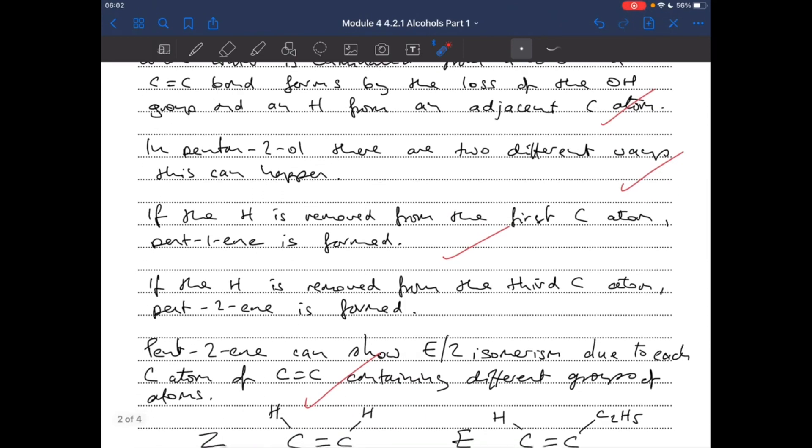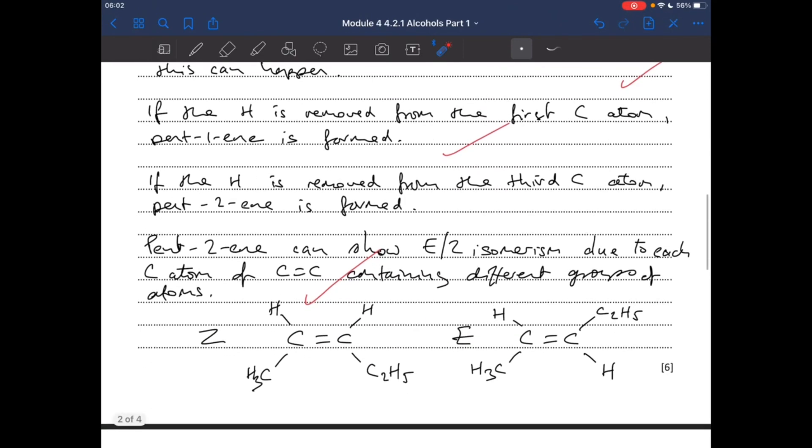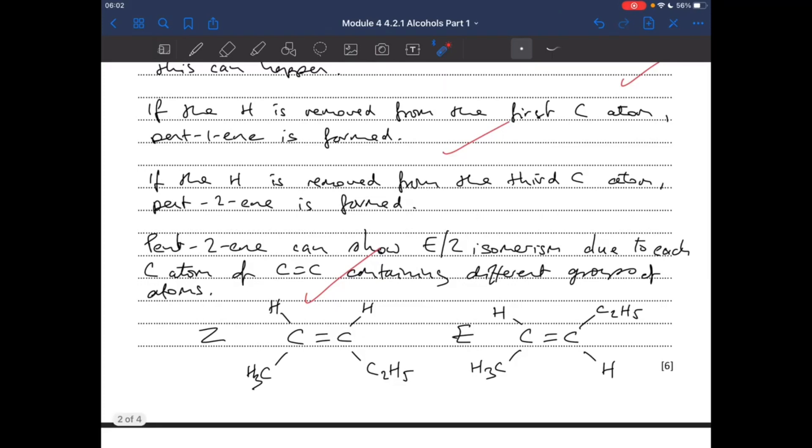And then here's my bit about EZ. Pent-2-ene can also show EZ isomerism due to each carbon atom of the C=C double bond containing different groups of atoms. So the Z form is when the priority groups are on the same side of the C=C double bond. The E form is when the priority groups are on opposite sides of the C=C double bond.